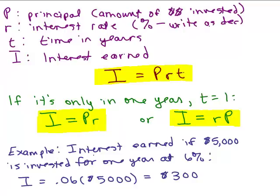So, here's a quick example. If you're trying to find the interest earned if you invested $5,000 for one year at 6%, I, the interest earned, is the rate, 6% written as a decimal is 0.06 times the principal $5,000, and that will be $300.